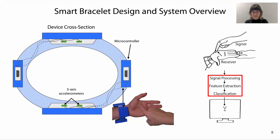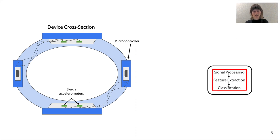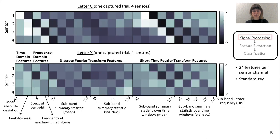We then designed a smart bracelet using force sensors at the wrist and investigated its capability to classify TSL letters using common signal processing, feature extraction, and classification methods. Three-axis accelerations per sensor channel are filtered and processed using principal component analysis, yielding a principal component that is then normalized across all force sensing channels and used to compute features.